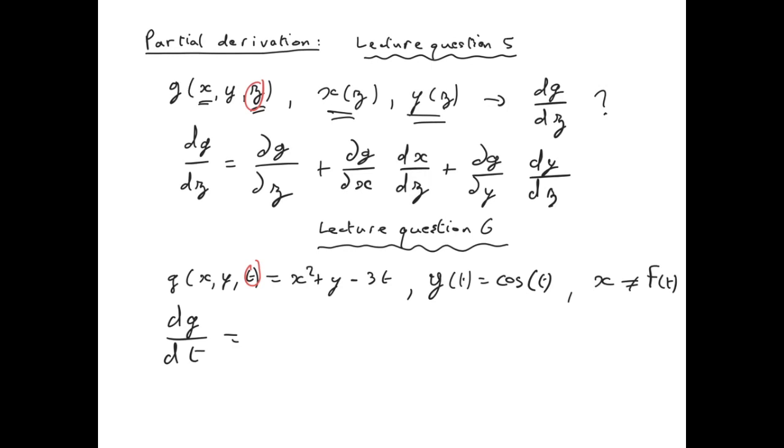So the first term will be the partial derivative of g according to t, in this case it's minus 3.